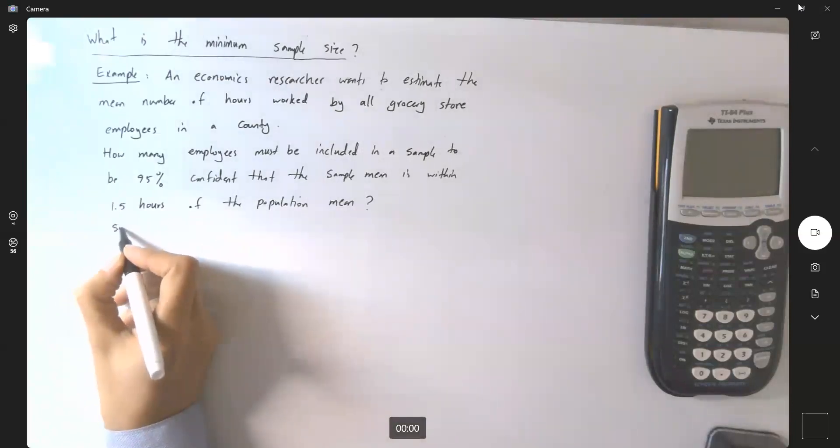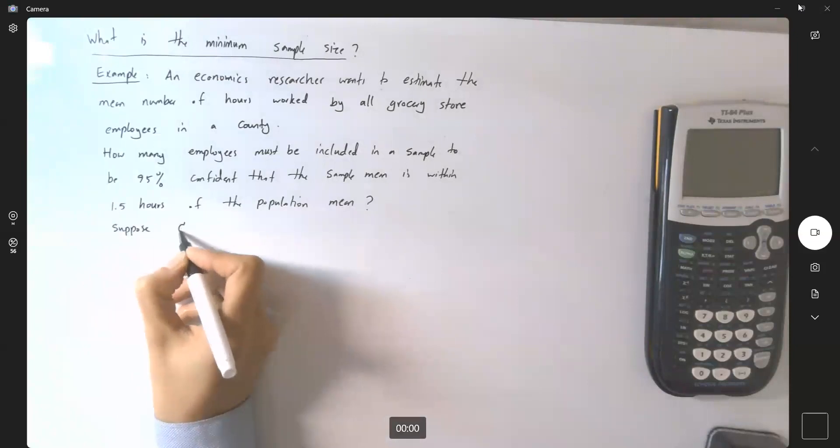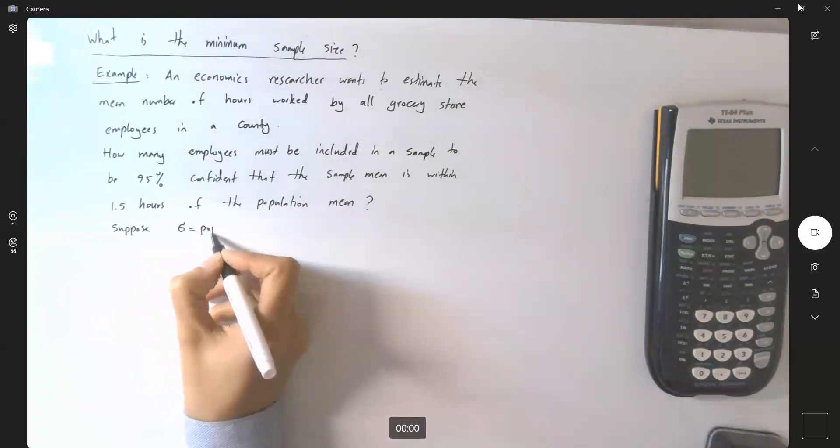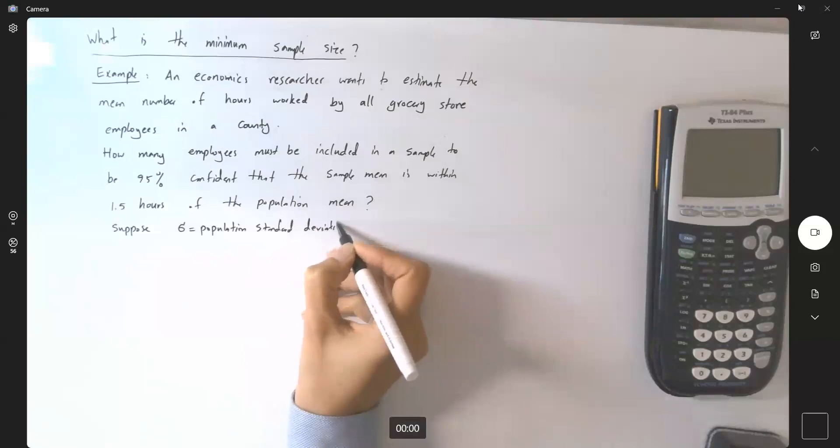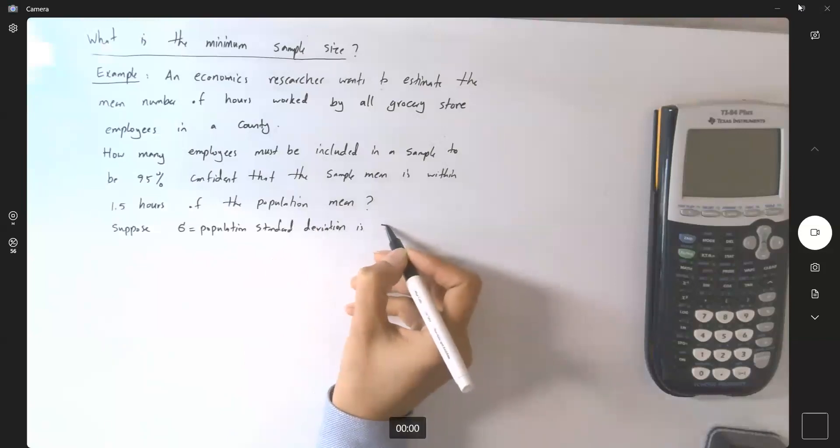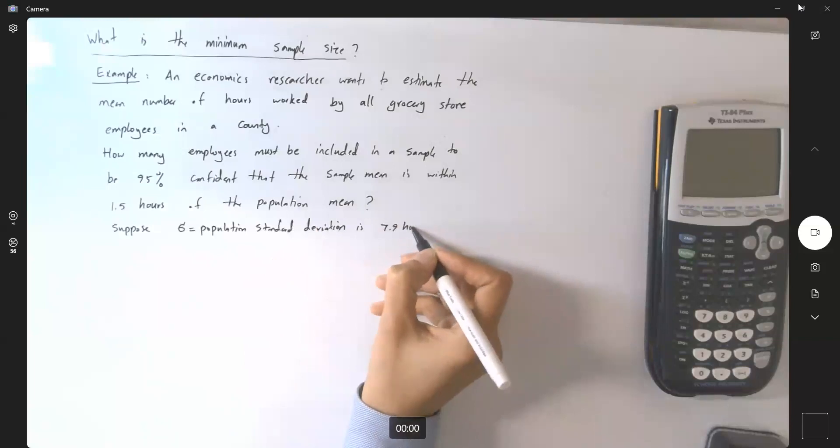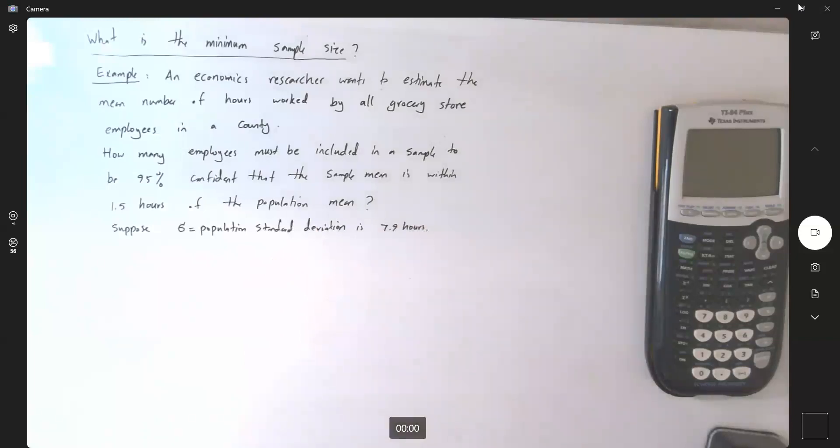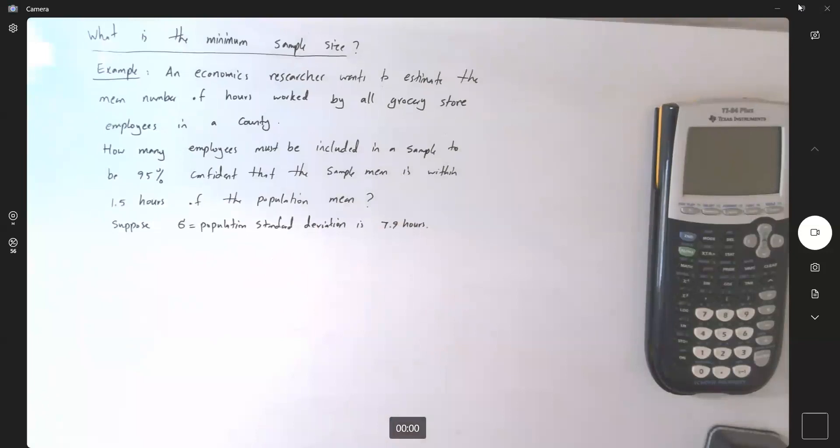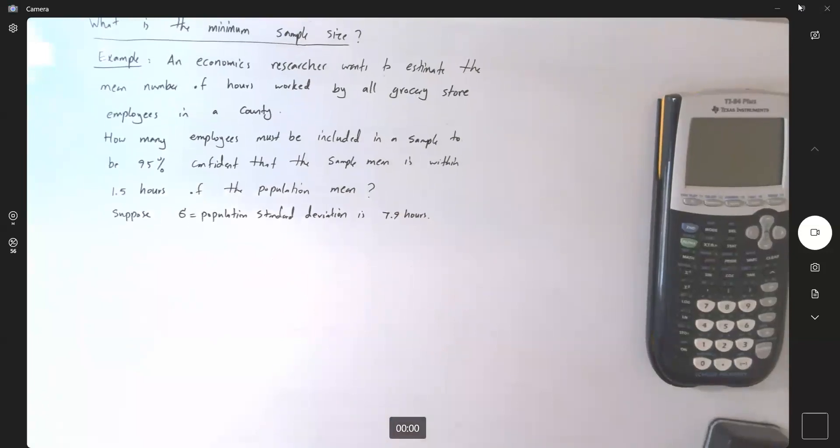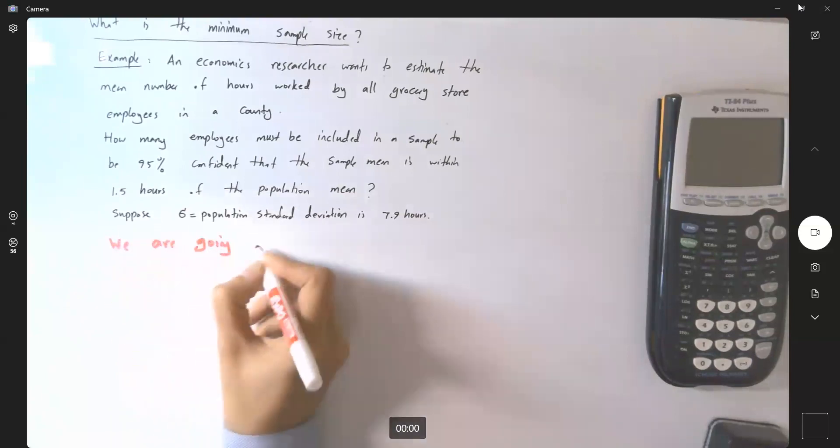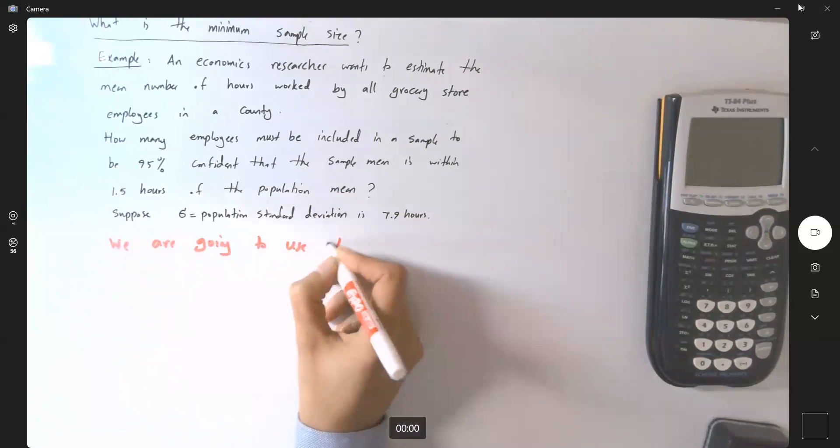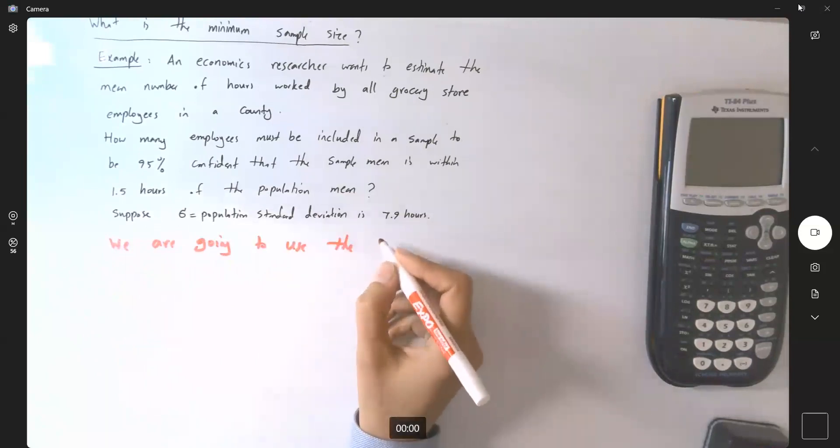Suppose we also know that sigma or population standard deviation is 7.9 hours. So let's answer this question. What are we going to do? We are going to use the margin of error formula.